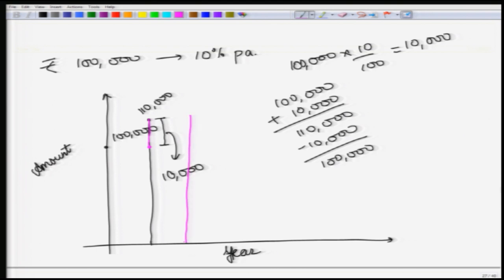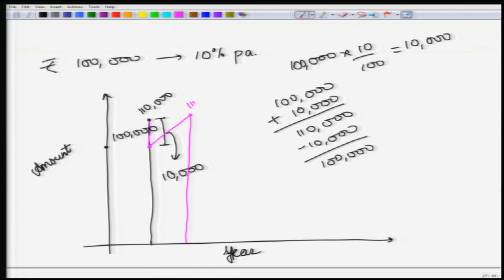At the end of the second year, the bank again gives you interest. Because the principal is the same — 100,000 rupees — the interest is again 10,000, and the amount goes up to 110,000. You again extract 10,000, bringing the situation back to the starting position. So as long as the rate of interest — or in the case of a forest, the rate of increment — does not change, and as long as the principal is not lost (no forest fire, no infestation), at the beginning of every year the situation will be the same as the previous year. This is a sustained yield.